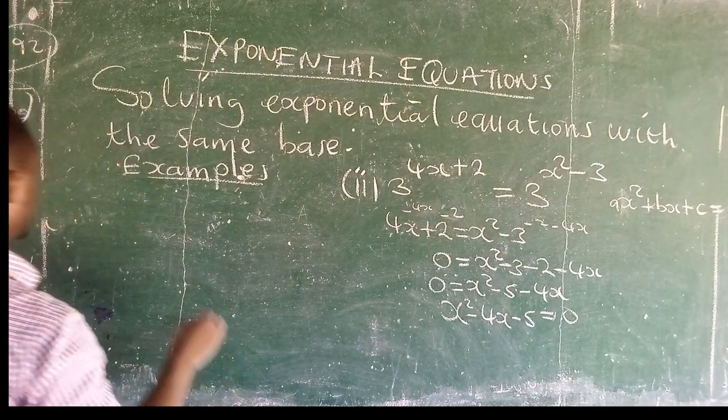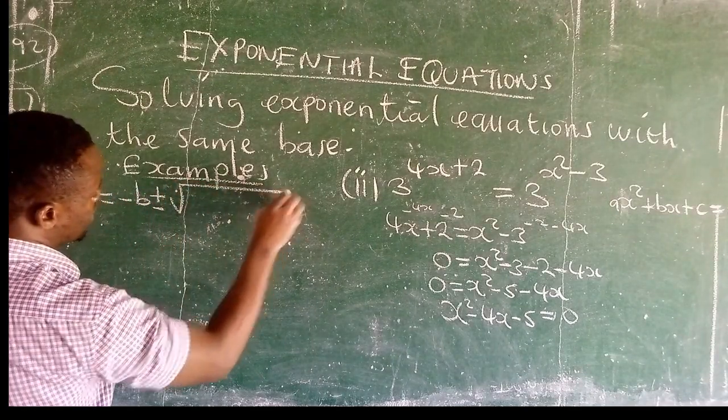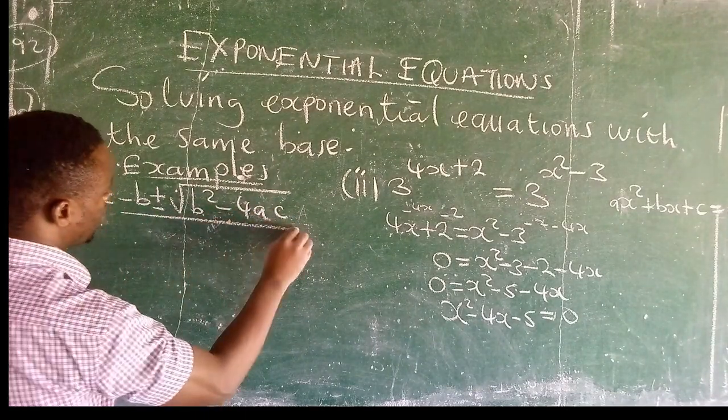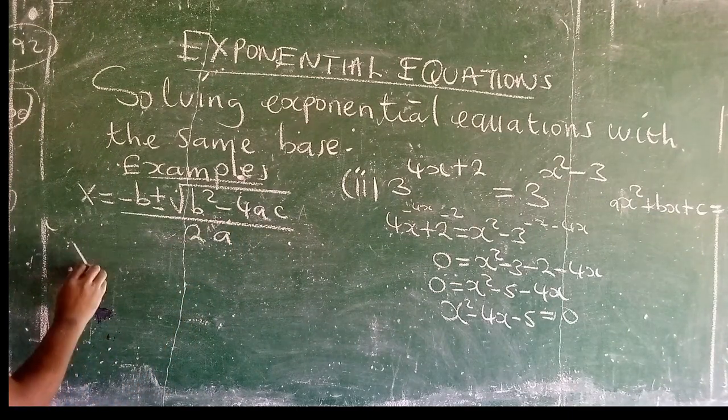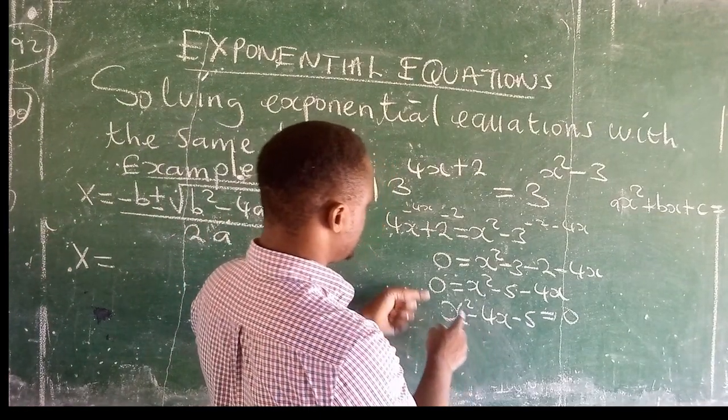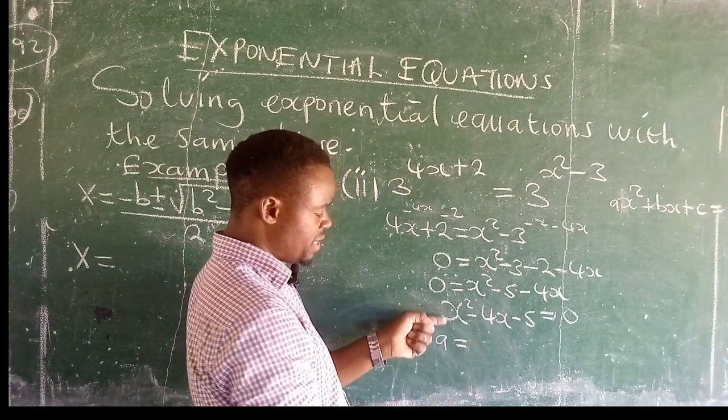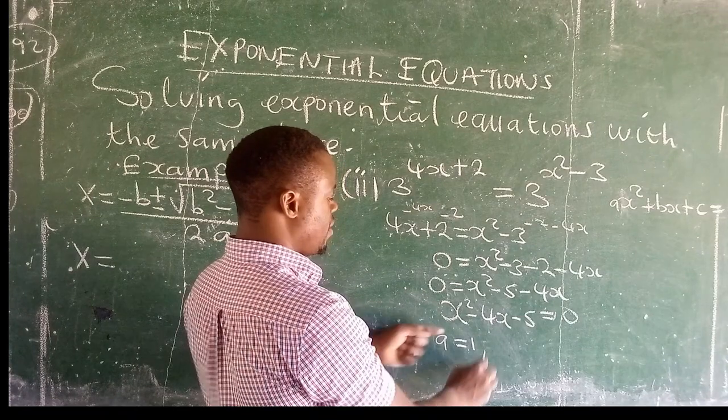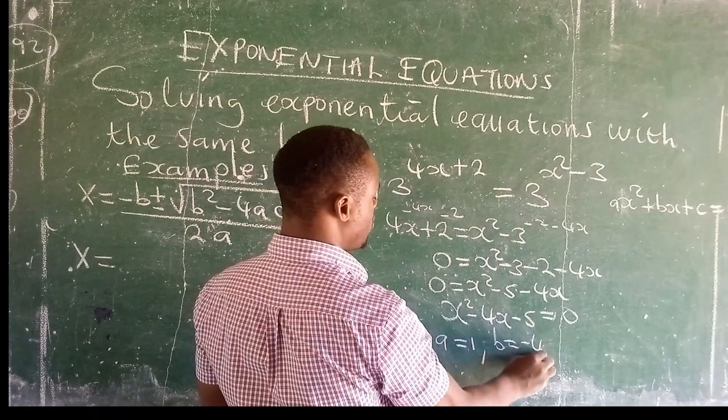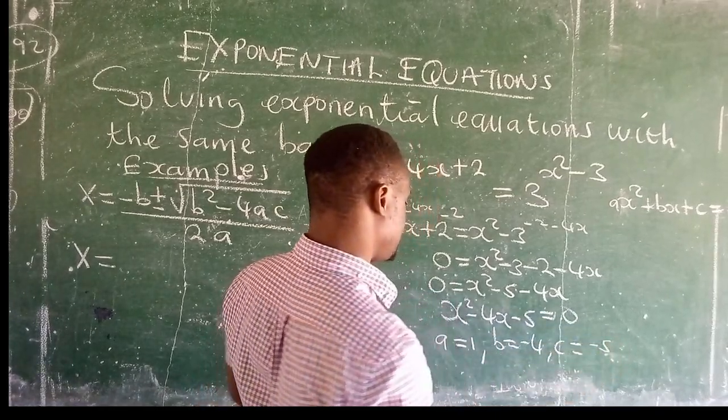How do we solve by using the formula? x is equal to negative b plus or minus the root of b squared minus 4ac over 2a. In this equation that we have, when we relate it to the standard form, we check: the coefficient a is 1, the coefficient b is negative 4, and c is negative 5.